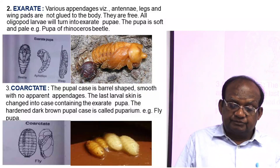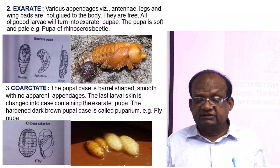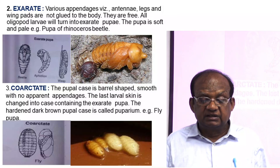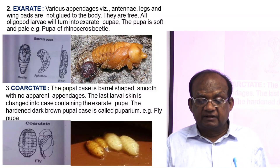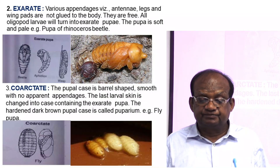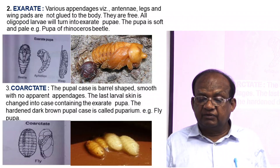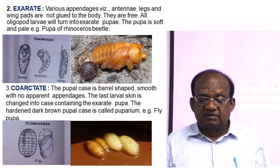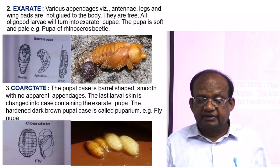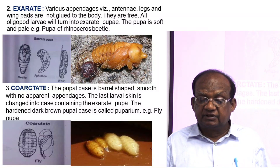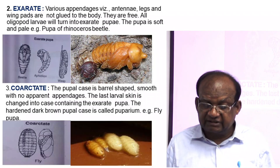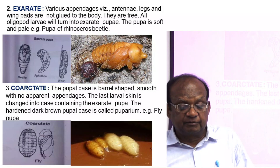The exarate type of pupa has various appendages — antennae, legs, and wing pads — that are not glued to the body; they are free. All oligopod larvae will turn into exarate pupa. The pupa is soft and pale in color. The pupa of Neuroptera (Rhynchophorus) is the best example of exarate pupa.